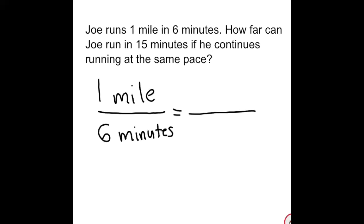Think about the examples we went over — remember, the same units have to be either across from one another or on top of one another. Since I can't put the minutes on top of one another, I'm going to put them across: six minutes, and 15 minutes across from that.